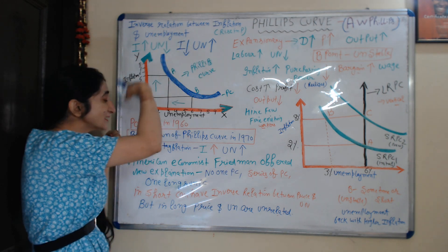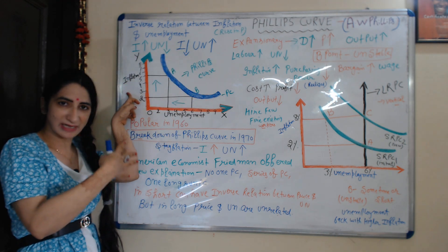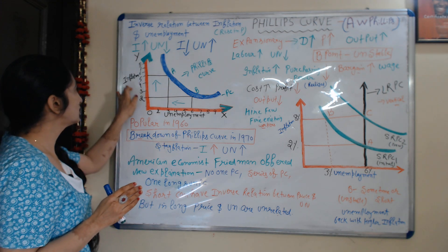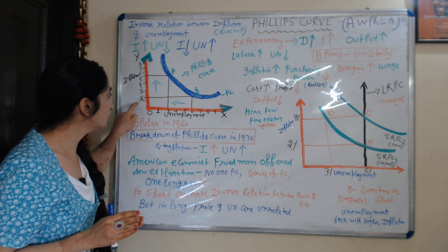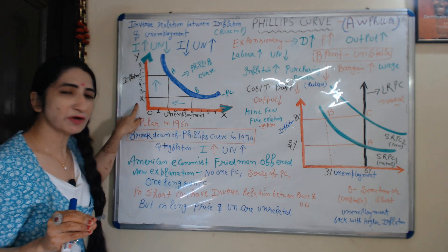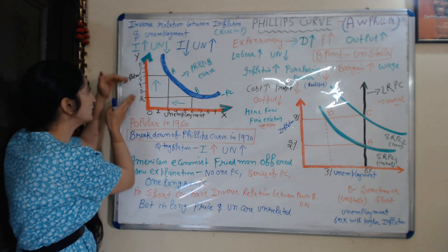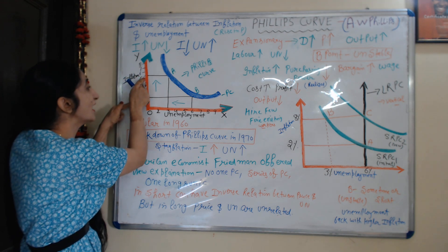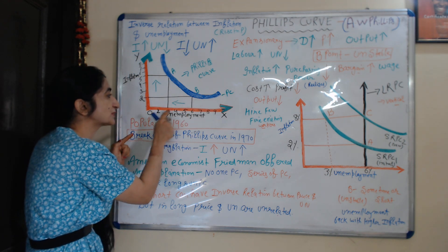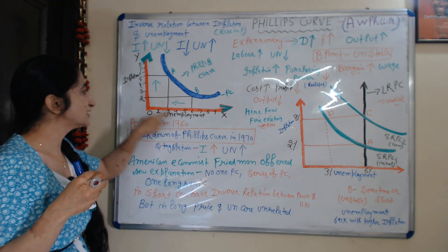We understand the inverse relation between unemployment and inflation with the help of this diagram. On the X-axis we take the rate of unemployment, and on the Y-axis we take the rate of inflation. When the rate of inflation is 2%, the rate of unemployment is 6%. As the rate of inflation increases from 2% to 5%, the rate of unemployment falls from 6% to 3%. This diagram basically shows the inverse relation between inflation and unemployment.